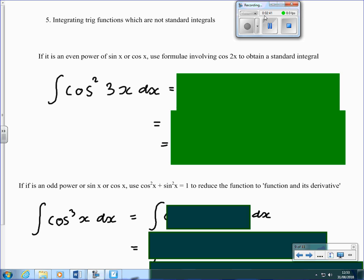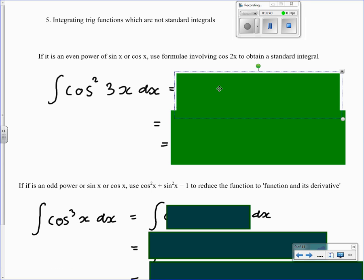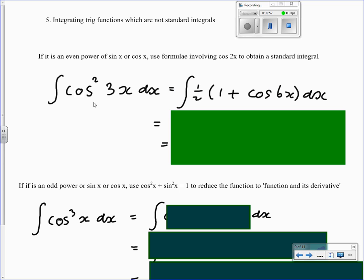If you're integrating a trig function which isn't a standard integral, you're going to have to use trig identities. The identities involving cos 2 theta can be used for integrating cos squared expressions or any even power of sine x or cos x.